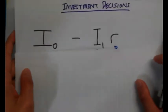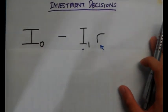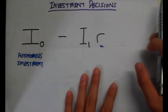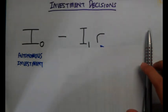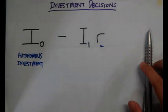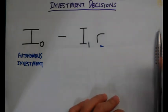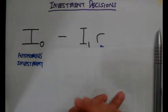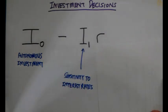Moving on to the investment function — we need to look at what actually affects investment decisions. I-naught refers to autonomous investment, which is investment not affected by interest rates or income. In real life, no matter what the economy is doing or what interest rates are, firms and businesses still need a certain minimum amount of capital and machines to start operations.